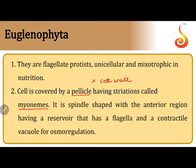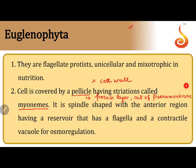Instead of a cell wall, they have a pellicle. What is a pellicle? A pellicle is a protein layer — a layer made up of protein. It is present outside the plasma membrane. So when I label Euglena from outside to inside, the first thing I label is pellicle, then plasma membrane, then cytoplasm.